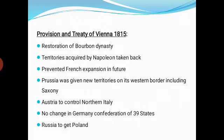The provisions of the Treaty of Vienna 1815 were: first, restoration of the Bourbon dynasty, which had ruled France; second, territories acquired by Napoleon were taken back; third, French expansion was prevented in the future — France was restricted from expanding into foreign lands.